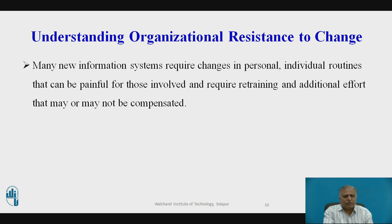Understanding organizational resistance to change: many new organizing systems require changes in personal and individual routines that can be painful for those involved and require retraining and additional efforts. Because information systems potentially change organizational structure, business processes, and strategy, there is often considerable resistance to them when they are introduced. Research on organizational resistance to innovation suggests that four factors are paramount: the nature of the IT innovation, the organizational structure, the culture and people in the organization, and the task impacted by the innovation. Changes in technology are observed, interpreted, deflected, and defeated by organizational task arrangements, structure, and people.